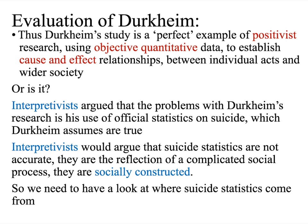So let's think about the strengths and weaknesses of Durkheim's study. On the one hand, it is the perfect example of positivist research — he uses objective, quantitative data to establish cause and effect relationships between individual acts like suicide and wider society. However, interpretivists would argue that the problem with Durkheim's research ultimately rests with his use of official statistics and his assumption that they are true. Interpretivists would say these statistics are not accurate — they're the reflection of a complicated social process, meaning they are socially constructed. They might not even be right in the first place, let alone tell us the true meaning behind the behaviour of suicide.